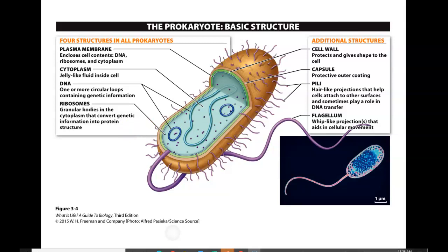Cell theory is an important theory that describes all living things. First, all living organisms are going to be made up of one or more cells — unicellular if one cell, multicellular if more. Humans are made up of trillions of cells. Second, all cells arise from other preexisting cells. In sexual reproduction, a sperm and egg come from preexisting cells to create a new organism. Unicellular organisms go through binary fission to create a new organism.